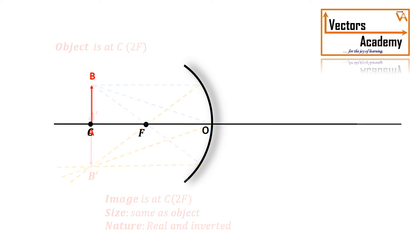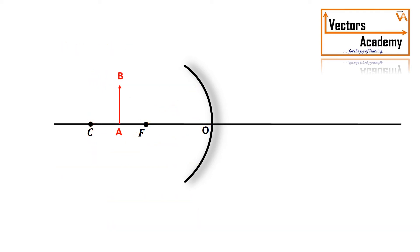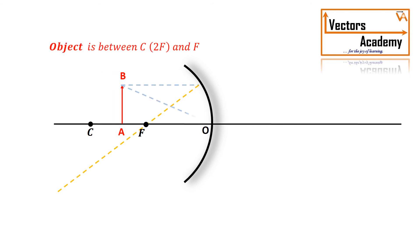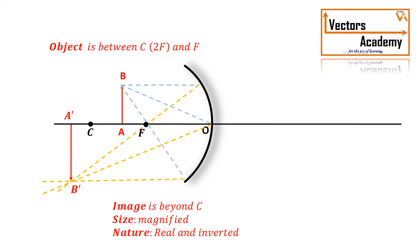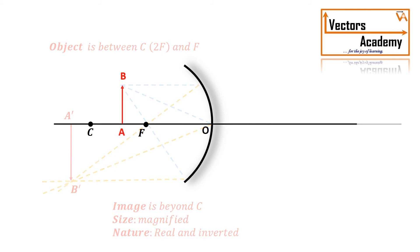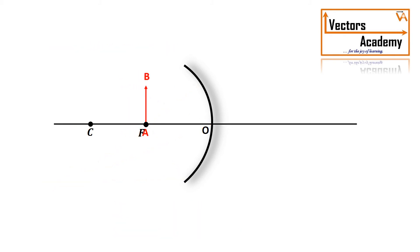When the object is brought even closer — between C and F — the rays get reflected such that the image is formed beyond C. It is inverted and enlarged. If the object is placed at the focal length, the reflected rays do not intersect, or they intersect at infinity. Hence the image is formed at infinity.